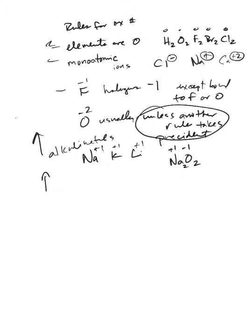Another higher up rule that I totally forgot is hydrogen. When hydrogen is with a non-metal, it's always a plus one. If it's with a metal, then it's minus one. And so you might think of something like water, H2O. Each hydrogen is a plus one. Each oxygen is minus two. In this case, the hydrogen has the higher precedent. And so then the oxygen flows from that.